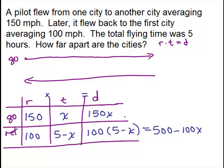So once you fill in the distance here on the chart, you can go back up to your picture and fill in how we're representing the distances up here. So going, the distance is 150X. And on the return trip, we simplified it so we could write that as 500 minus 100X.